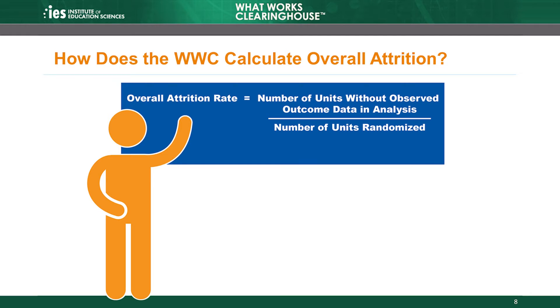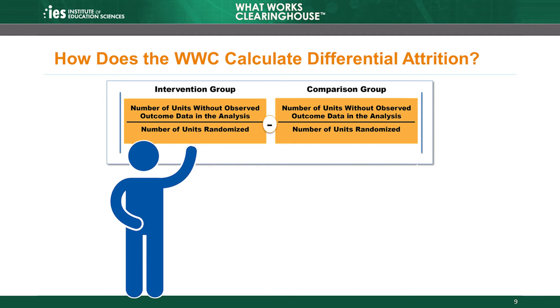Let's take a closer look at how the WWC calculates overall and differential attrition. The overall attrition rate is simply the number of units without observed data in the analysis divided by the number of units that the study randomly assigned. To calculate differential attrition, the WWC uses the same approach but does the calculation separately for the intervention group and the comparison group. Then, after calculating attrition for each group, find the difference between the two attrition rates and take the absolute value of that difference to get the differential attrition rate.